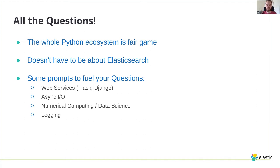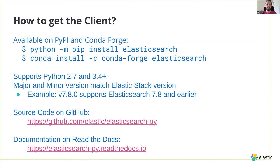I have some prompts listed — stuff in the Python space that might get your brain going for some good questions. Feel free to ask them any time. We'll collect them up and make sure they get answered. First thing: if I want to use Elasticsearch with Python, how do I get the client? It's available on the Python Package Index. If you're using Conda, you can get it on Conda Forge.